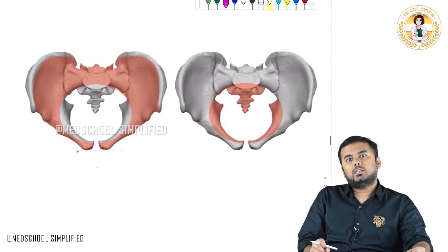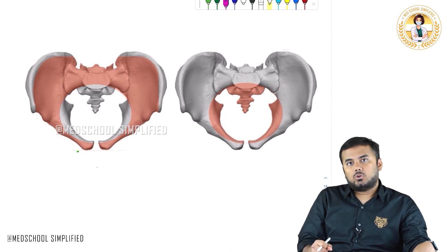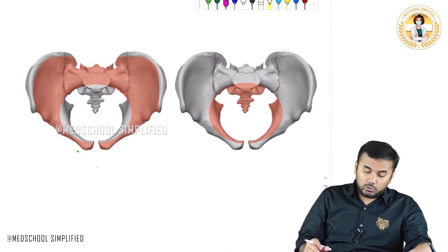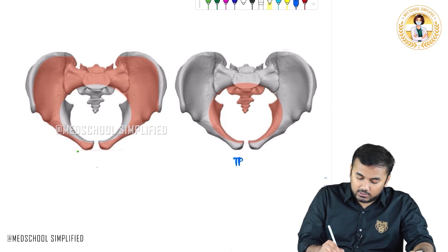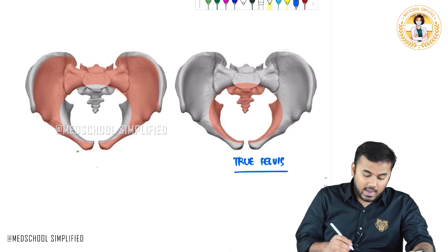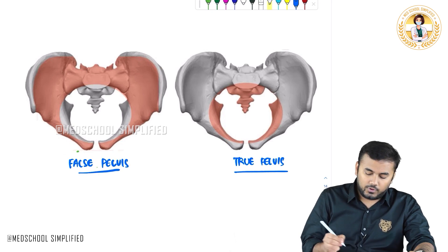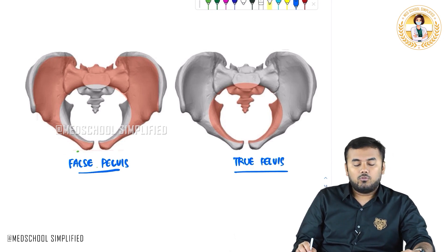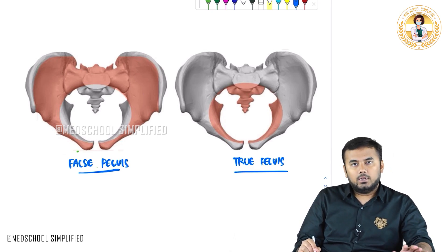Looking at the pelvis, we have two parts: one is called the true pelvis and another one is called the false pelvis. In the picture here, you can see this is the true pelvis and this is the false pelvis. Now we shall make out the difference between how the true pelvis and false pelvis look in males and females.